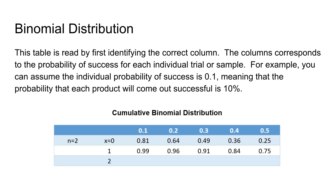First, you need to identify the correct column. The columns correspond to the probability of success for each individual trial or sample. In this example, the probabilities of success are 0.1, 0.2, 0.3, 0.4, and 0.5. For a coin-flipping example it would be 0.5, so we use that column. For a probability of success of 0.1 — meaning the probability that each product will come out successful is 10% — you would use that column.